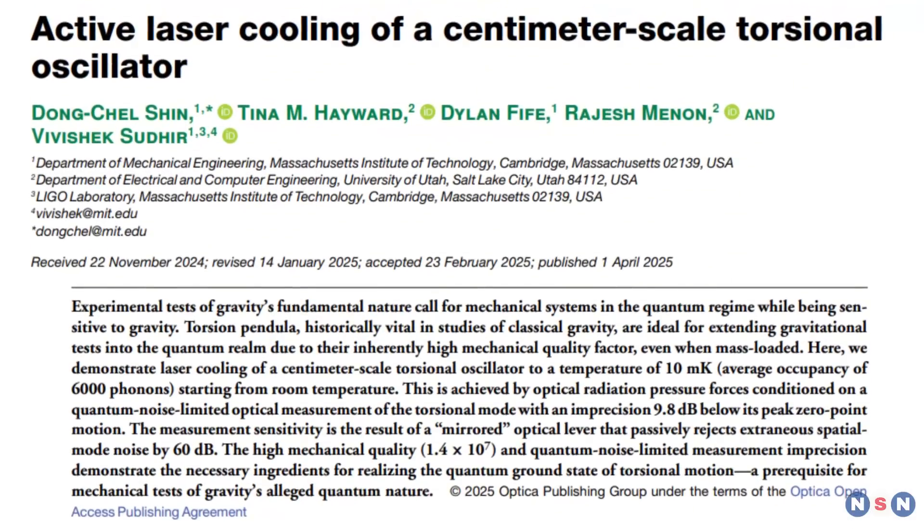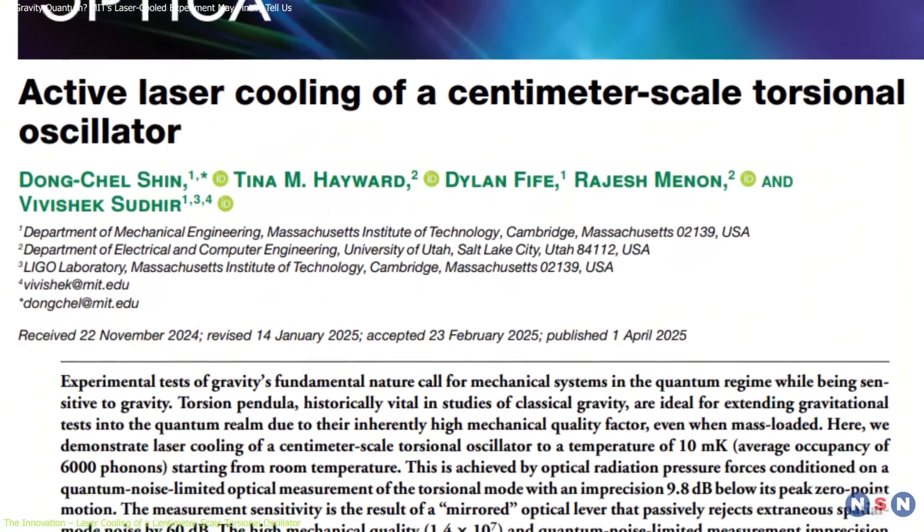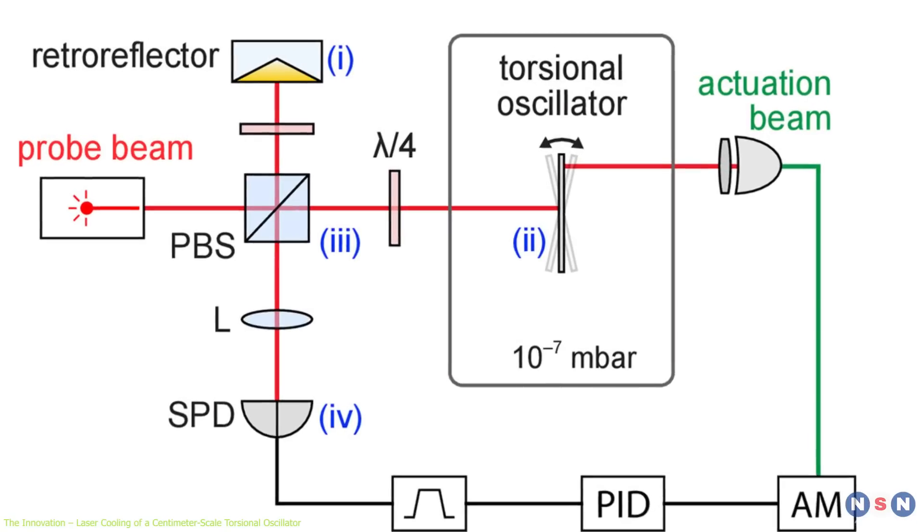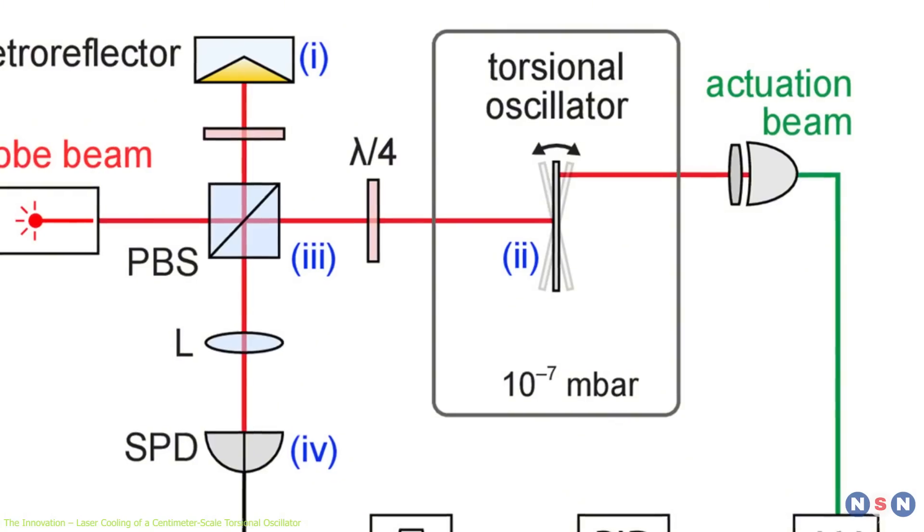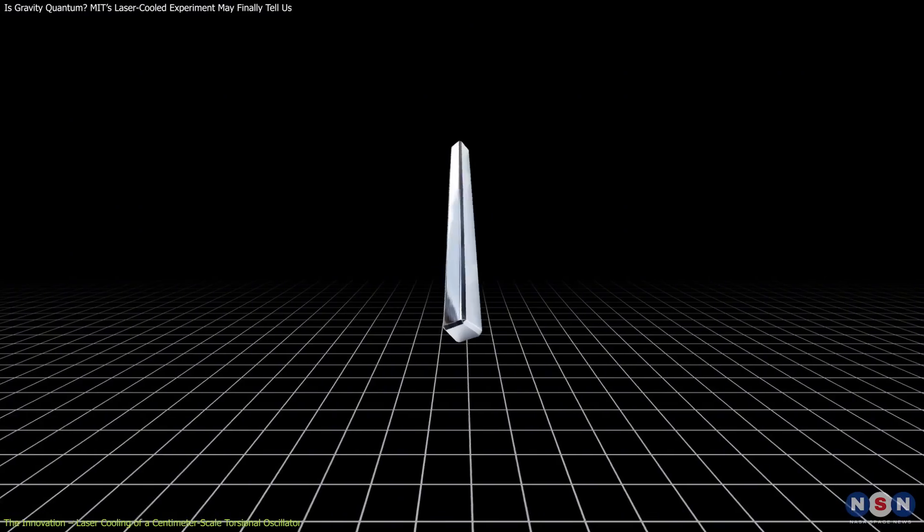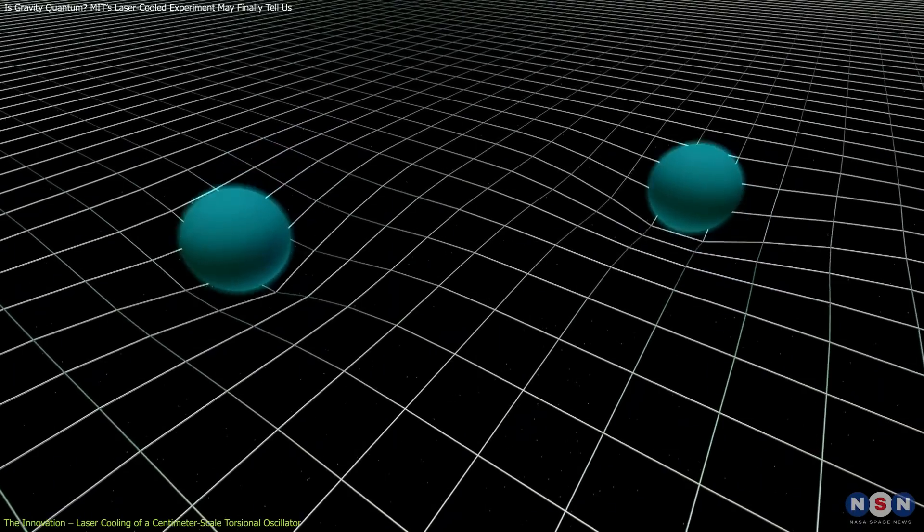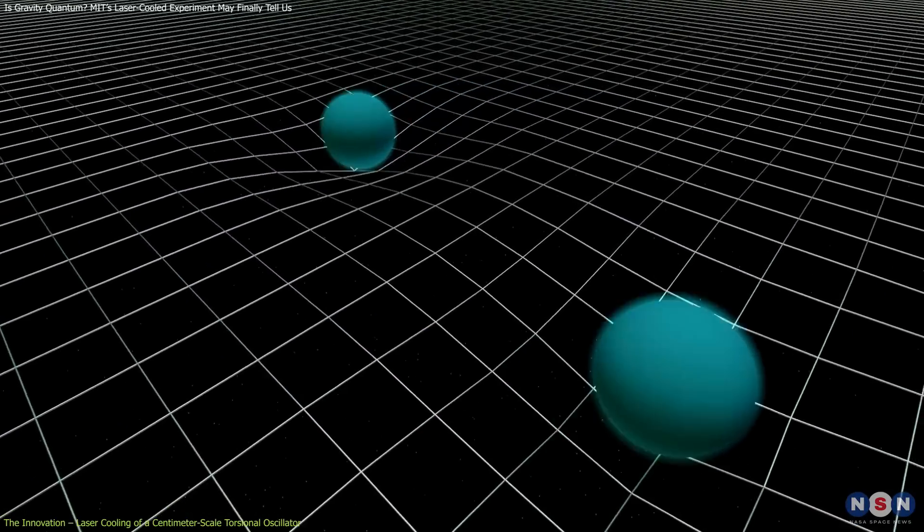At the heart of this breakthrough lies a mechanical device that twists: a torsional oscillator. Picture a horizontal bar suspended from a wire that can rotate slightly back and forth. Small angular shifts in such a system can be incredibly sensitive to external forces, including gravity. Until now, these devices were part of classical gravitational experiments.